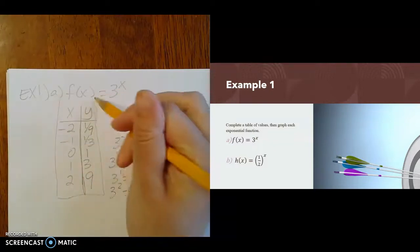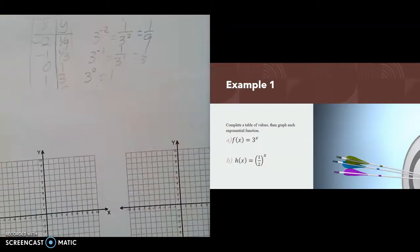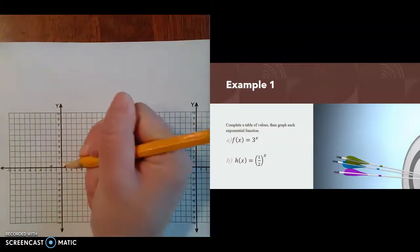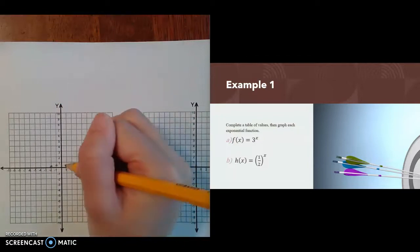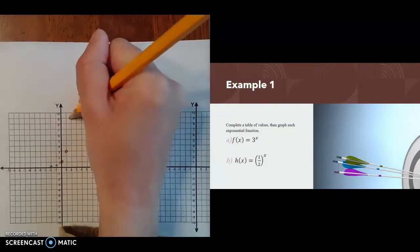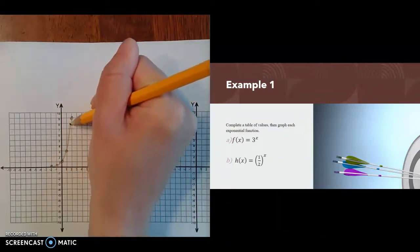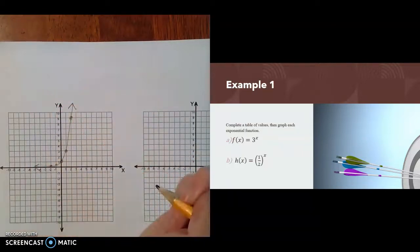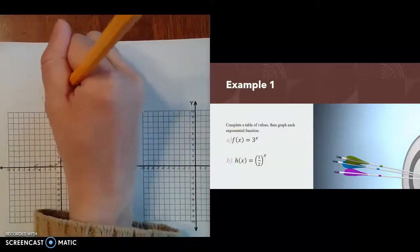Now that we have our table of values ready, let's go ahead and graph it. The first point is negative 2, 1 ninth — very close to 0 but not quite. At negative 1, the y value is 1 third, a little under one half. At 0, y is 1. At 1, y is 3. And at 2, y is 9. On the right side, the graph increases faster and faster. On the left side, it gets closer and closer to 0 but never touches it. That's the graph of f of x equals 3 to the x.